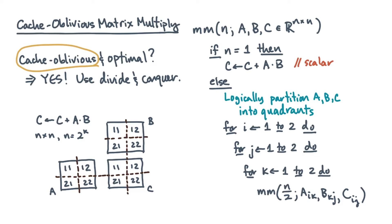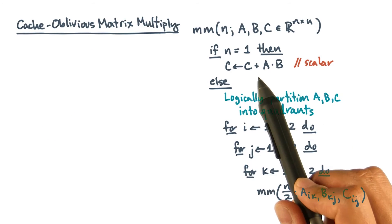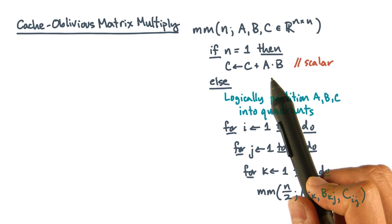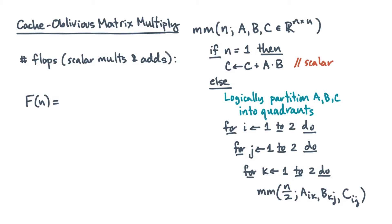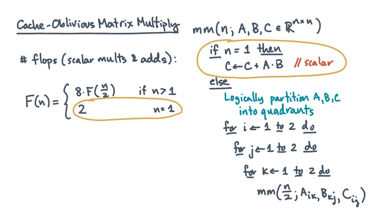Now we need to analyze this algorithm. Let's forget about cache misses for a moment and count the number of adds and multiplies. Since the algorithm is recursive, you write down a recurrence relation. The first case counts the eight recursive calls on half the problem size. The base case counts the flops — namely, there are two. Solving this recurrence exactly gives two n cubed flops, which is what you'd expect.